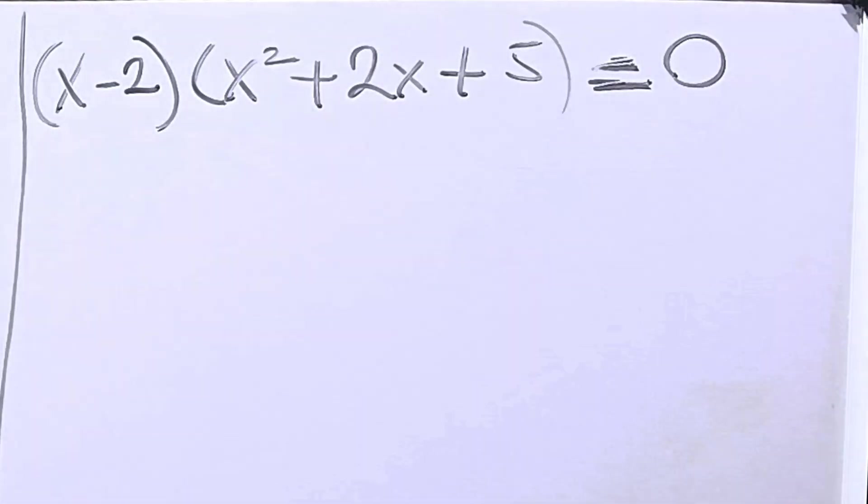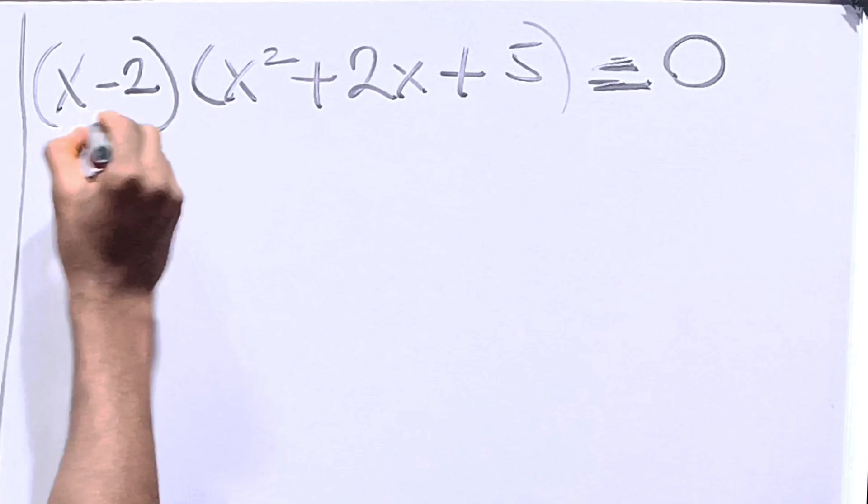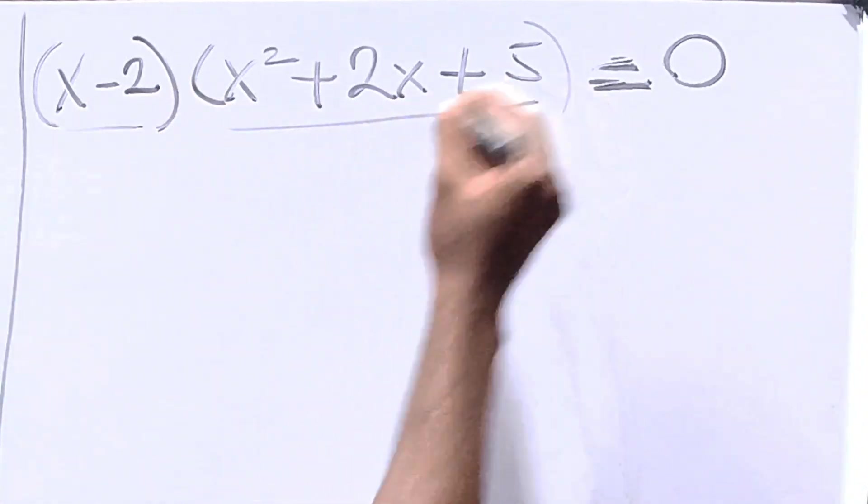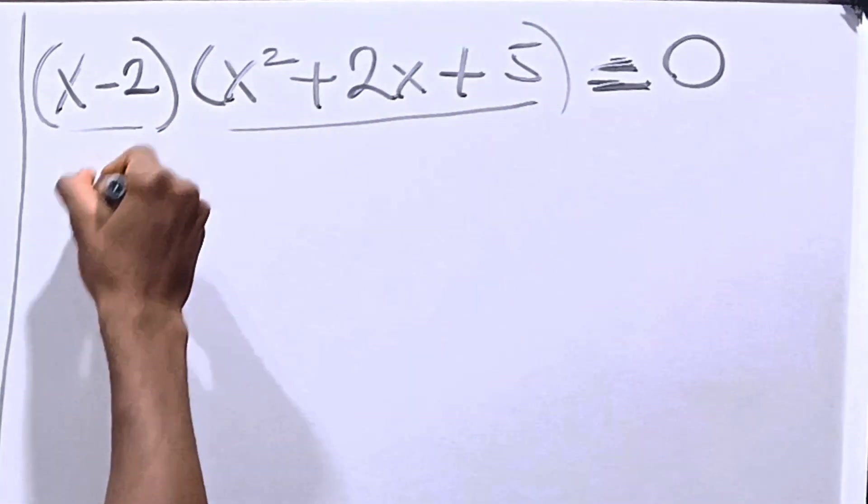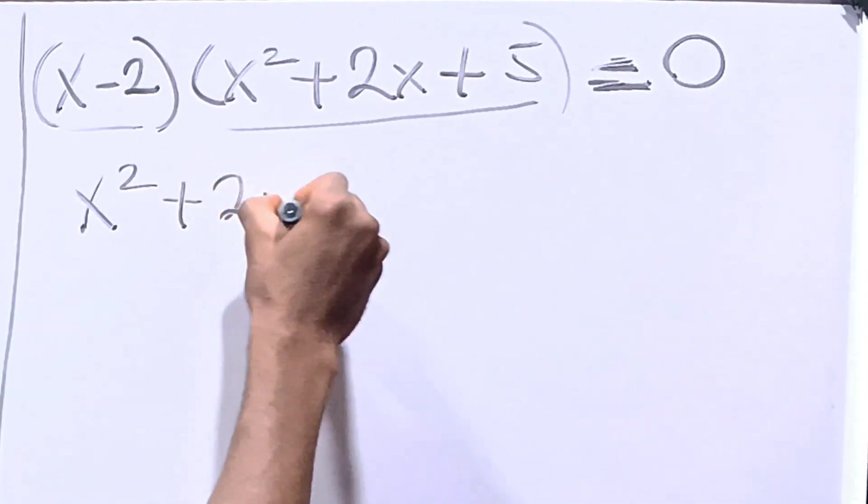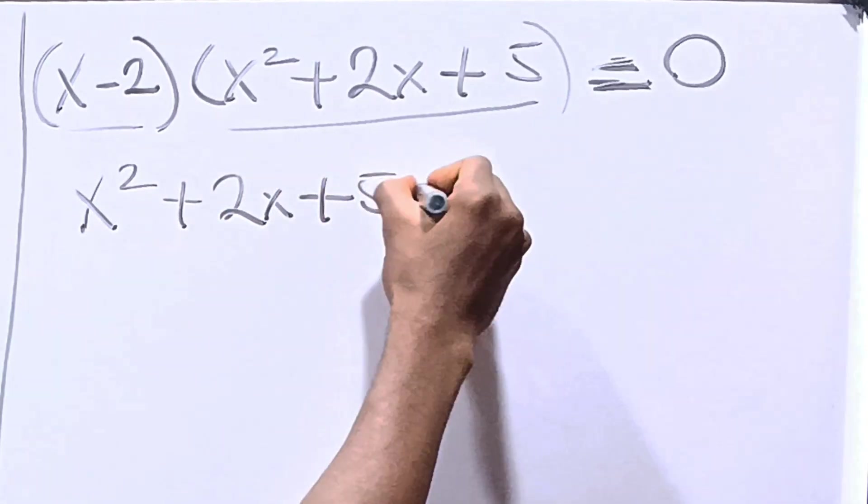Continuing from here, we can say that x minus 2 is equal to 0 or this is equal to 0. Hence, if this is equal to 0, we have x squared plus 2x plus 5 is equal to 0.